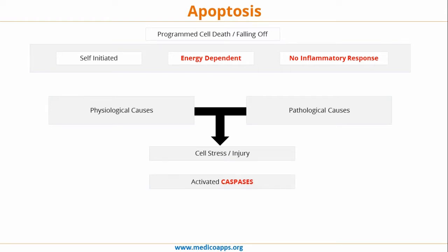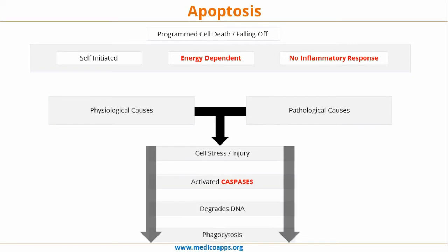Once the cell is under stress or injury, this leads to the activation of caspases. Caspases are the central enzymes which coordinate the entire apoptosis process. Once caspases are activated, this leads to the degradation of DNA and final apoptosis. The apoptotic cell is finally phagocytosed.